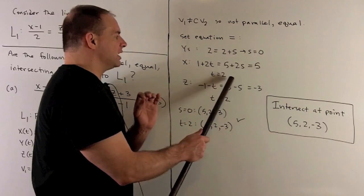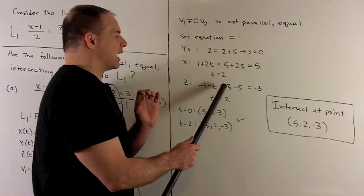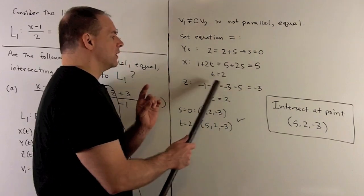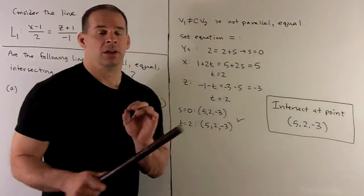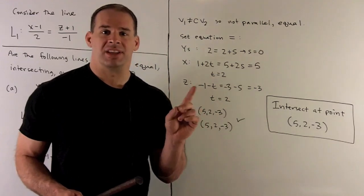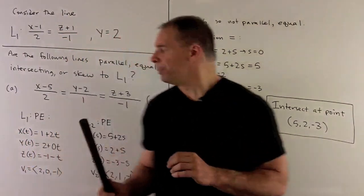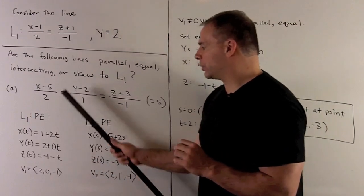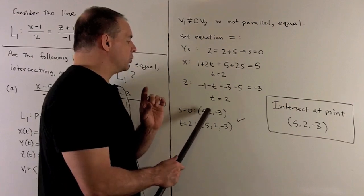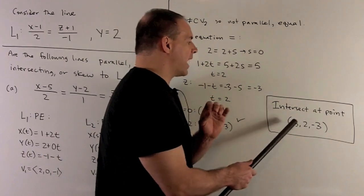From the x-equation, we get t equals 2. Checking the z-equations: minus 1 minus t equals minus 3 minus s, which with s equals 0 gives minus 1 minus t equals minus 3, so t equals 2 again. Since the values are consistent, there is a point of intersection. Substituting s equals 0 into the second line and t equals 2 into the first both yield the point (5, 2, -3), confirming the intersection.